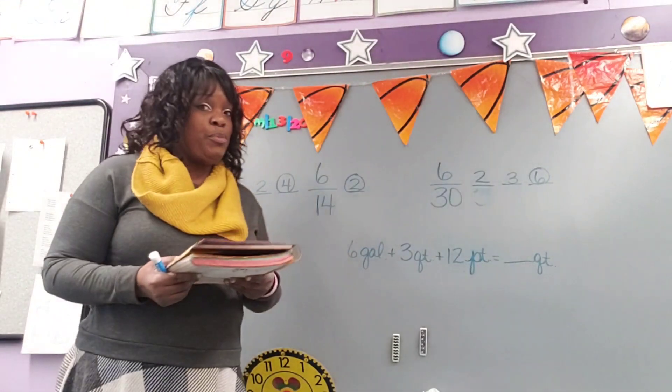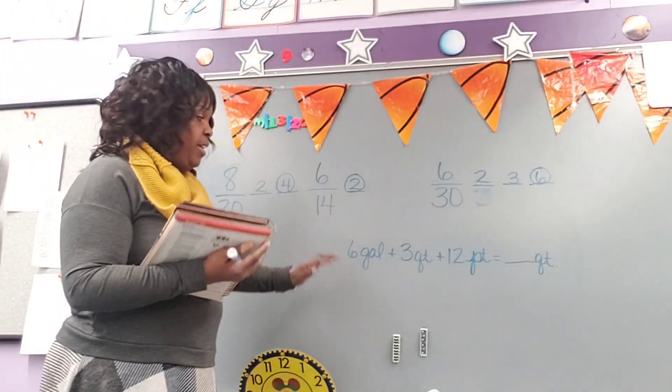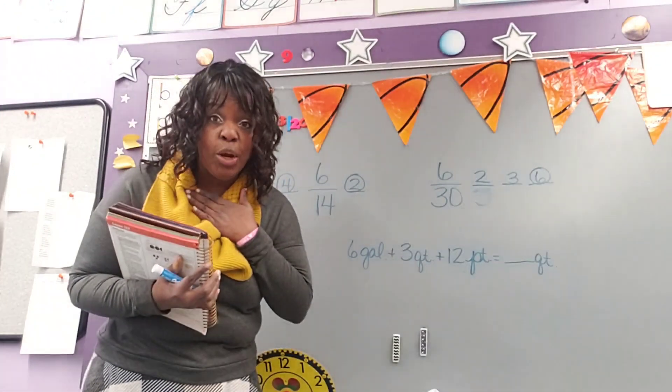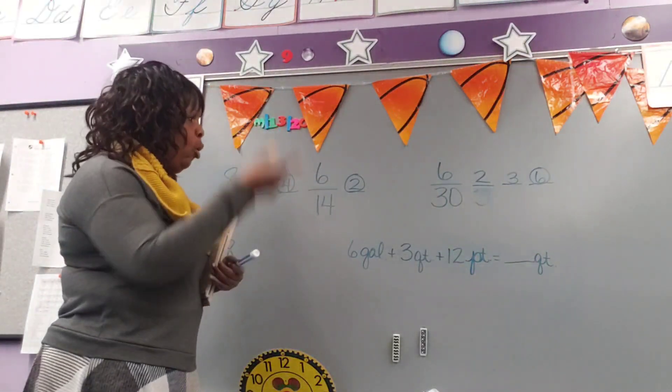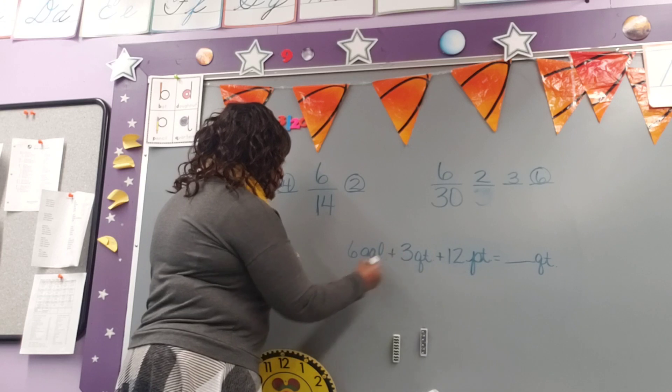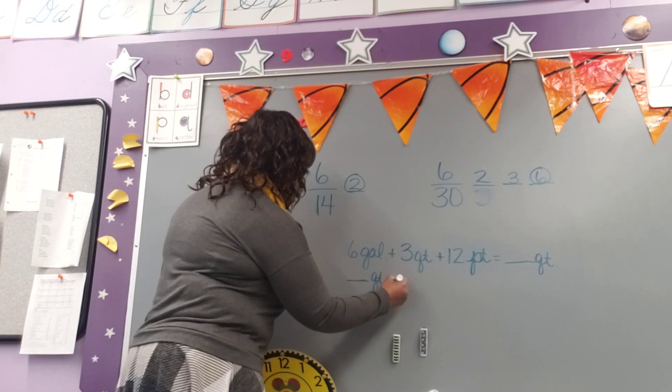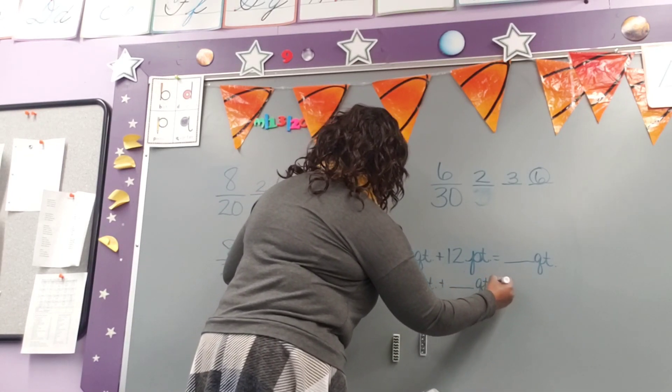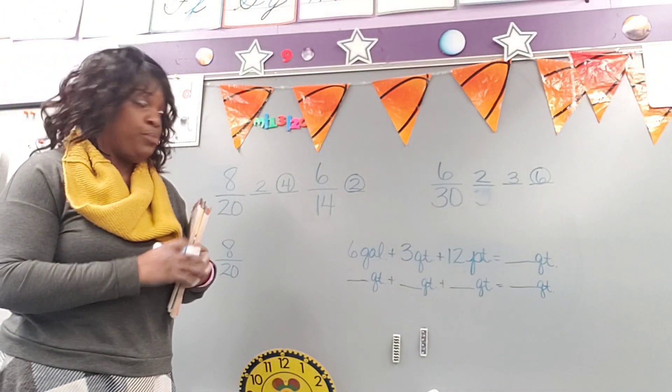It has 6 gallons plus 3 quarts plus 12 pints equals blank quarts. So when we're looking at our measurement problem, it's the same thing that we've been doing all along. We look at what we have. 6 gallons plus 3 quarts plus 12 pints equals... My quarts are missing. Oh no. When I find what's missing, I'm going to be a good detective, and I always write my clues in my handy-dandy notebook underneath. So underneath all of these three needs to go blank quarts plus blank quarts plus blank quarts equals blank quarts.